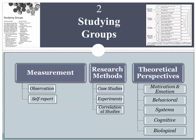Moving right along to measurement, research methods, and theoretical perspectives. In terms of measurement, we'll deal just with observation and self-report, recognizing of course there are many other ways to measure group phenomena, and then we'll deal with three basic types of research methods before turning to theoretical perspectives.